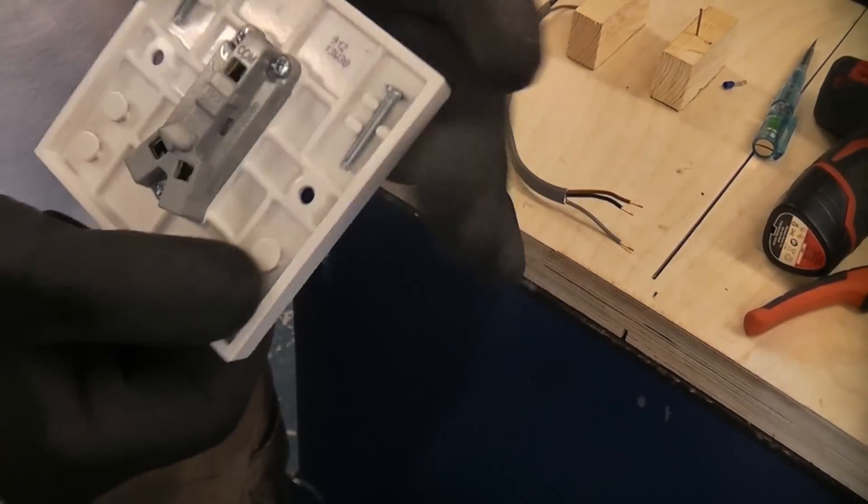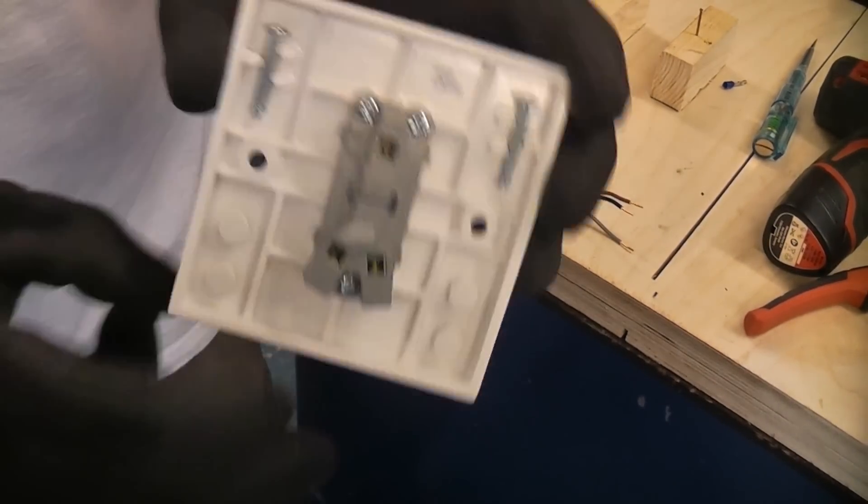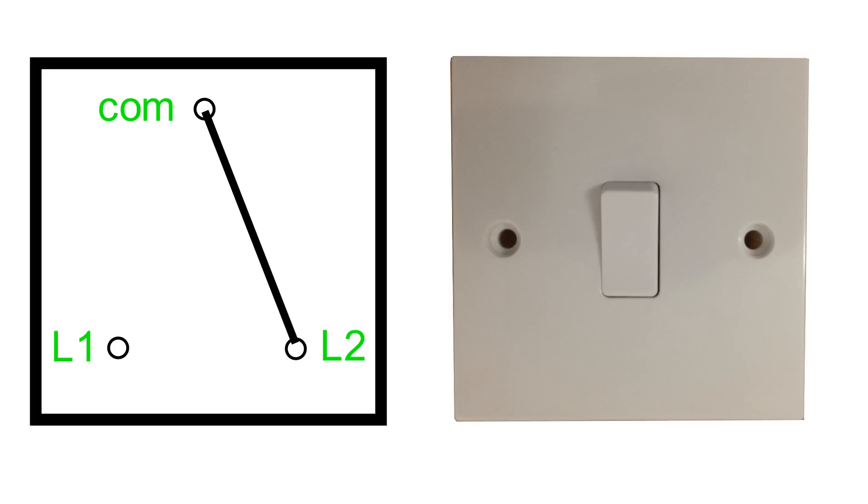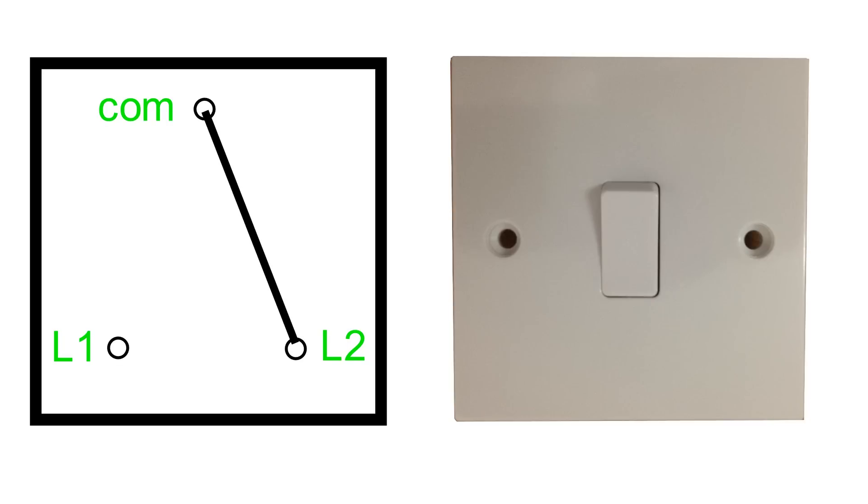A switch like this which is two-way will have a comm terminal, an L2 terminal and an L1 terminal. This switch does not really have an on and off position, it is either in the L1 position or the L2 position depending on where the switch is.